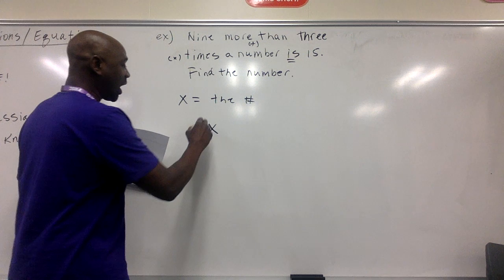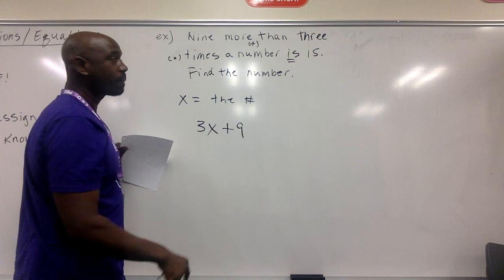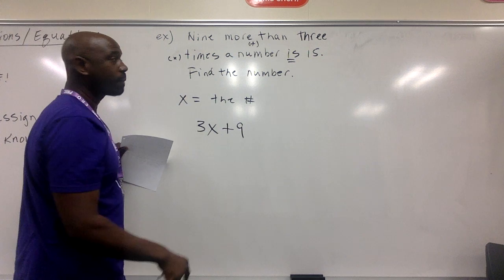Nine more than three times a number is 15. You need three times the number, and then nine more than that. So we translate this into the equation: 3x + 9 = 15. We've translated the word problem into an equation.